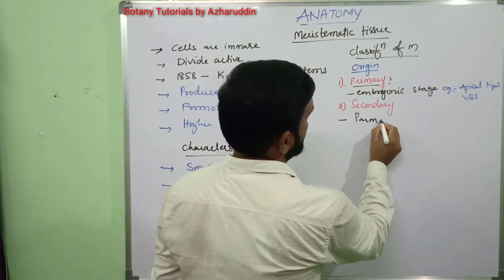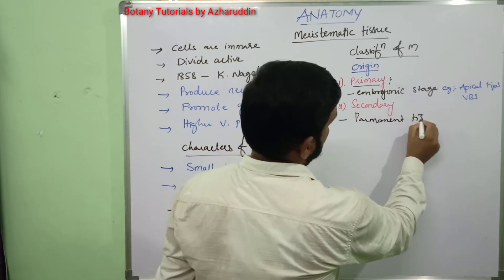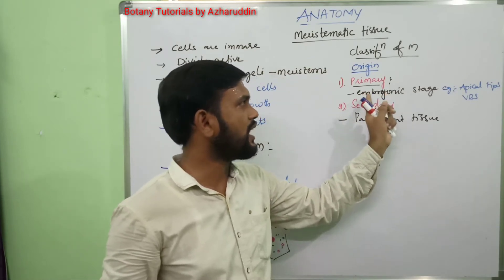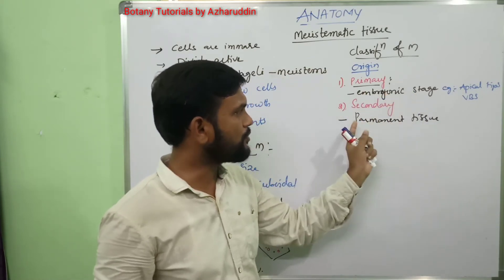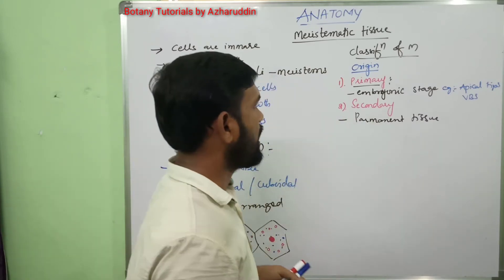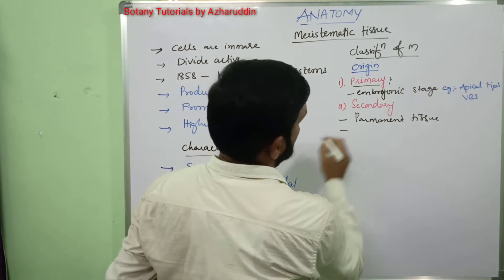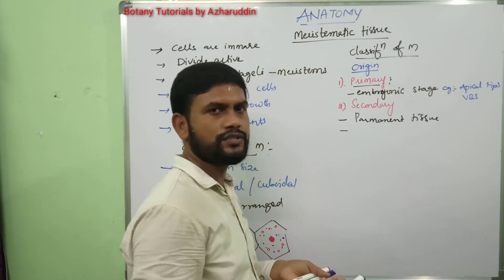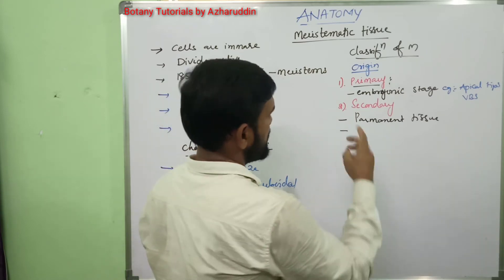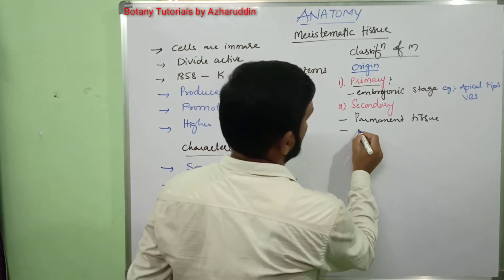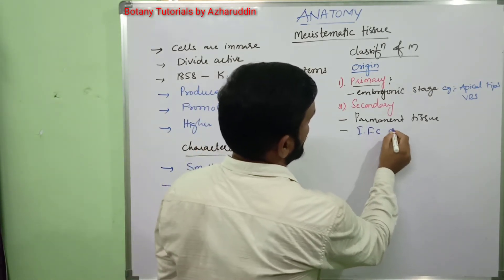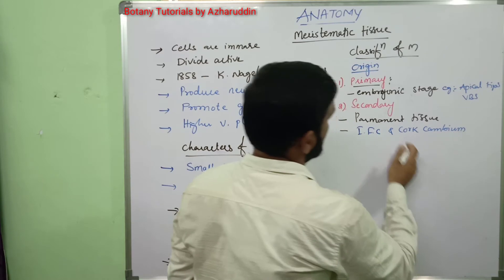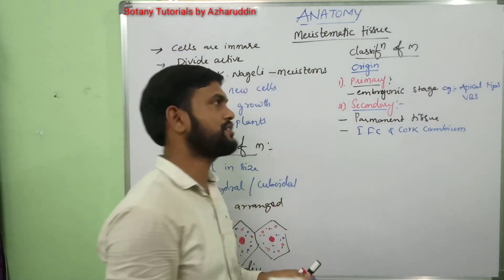Secondary meristems are formed from permanent tissues and are not formed at embryonic stages. They are found in cork cambium and interfascicular cambium. Examples for secondary meristems are intervascular cambium and cork cambium.